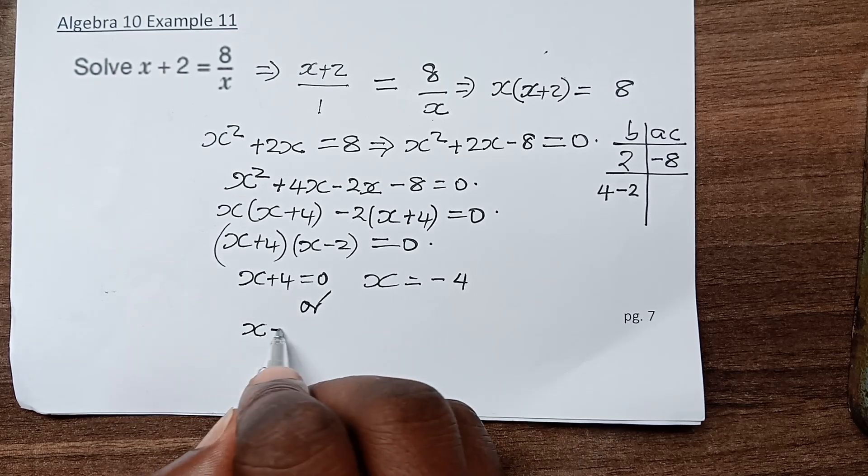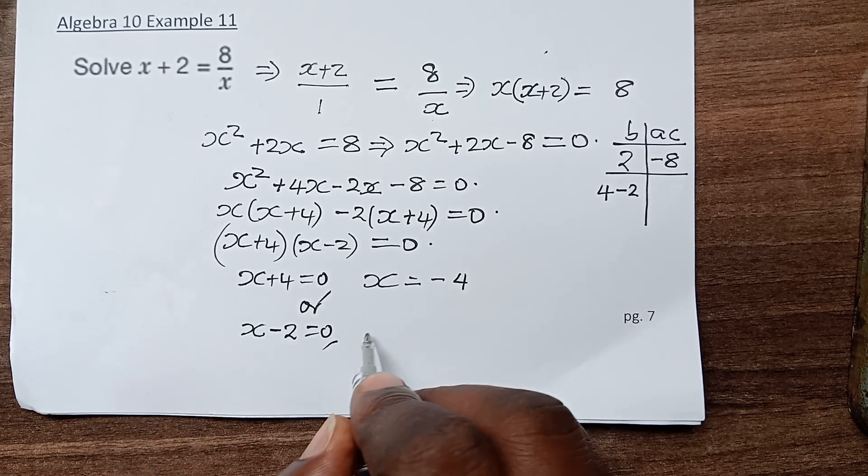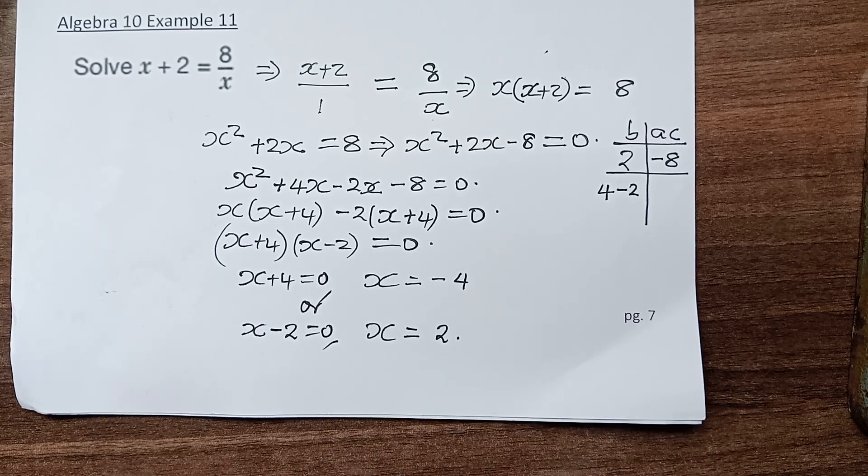Or the other bracket could equal 0. If this is true, then x equals positive 2.